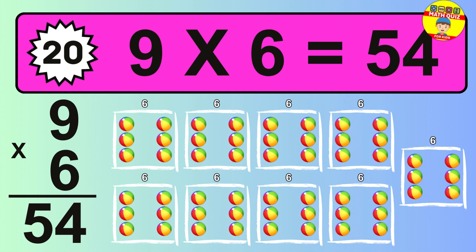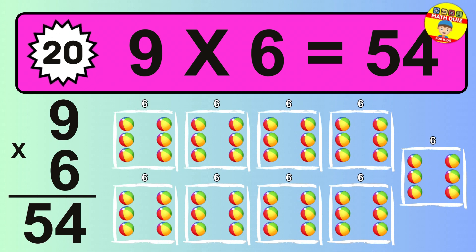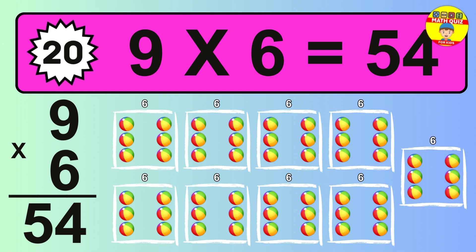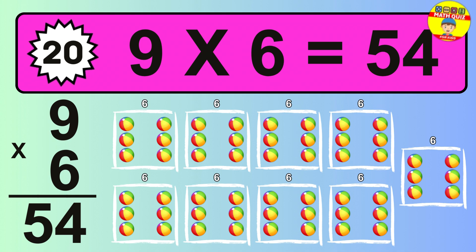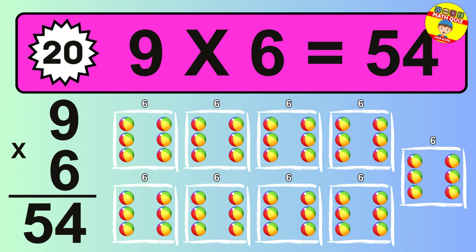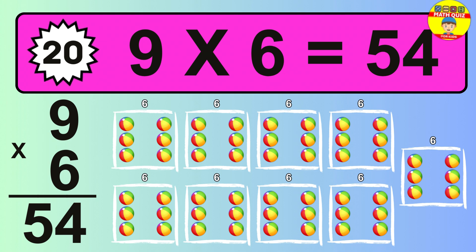The answer is 9 times 6 is 54. To calculate, we have 9 groups with 6 balls each one. So, how many balls do we have? 54 balls.